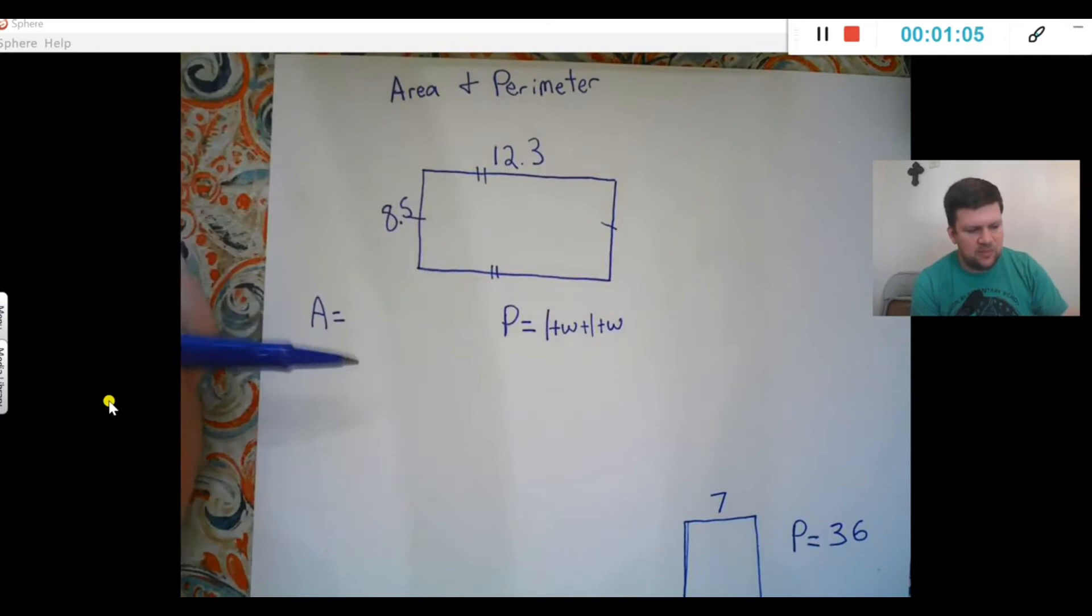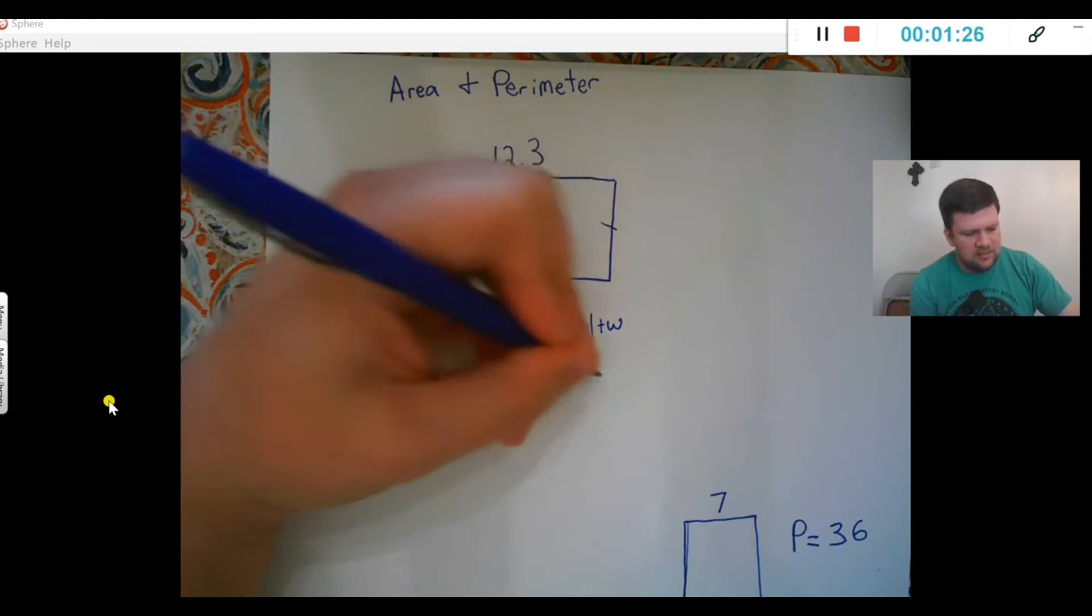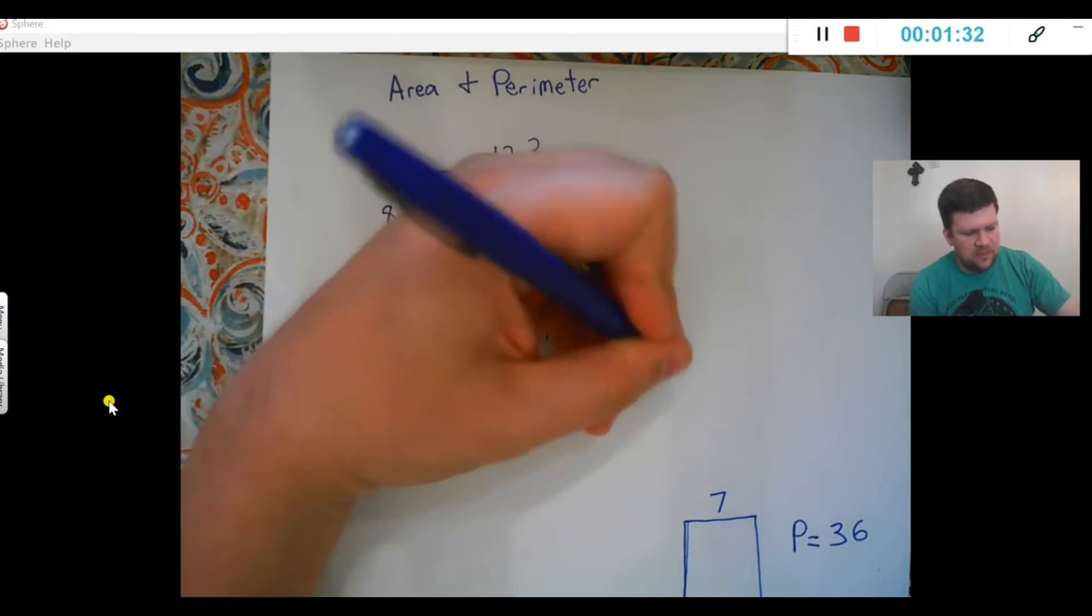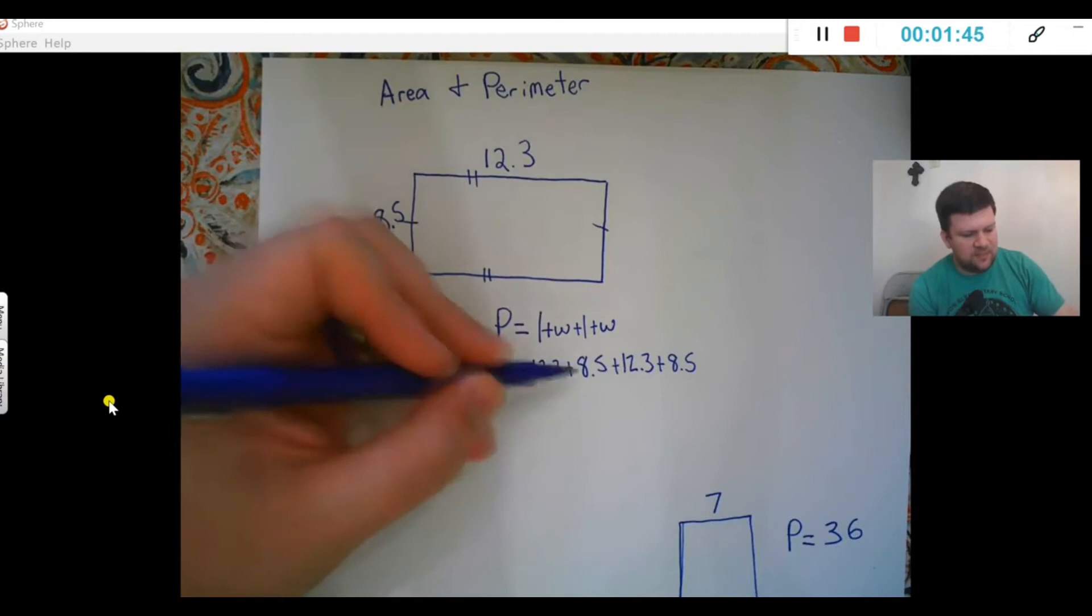All I need to do for this is add length plus width plus length plus width. So 12.3 plus 8.5 and the same thing over again. Just adding that together, however you want to add it up. What I would do is 12.3 plus 8.5 to give me 20.8, and then doing that again would be 20.8 again.